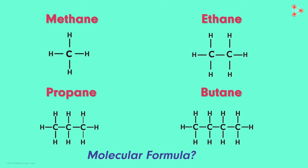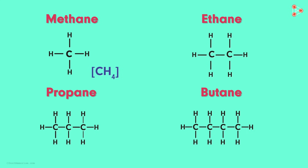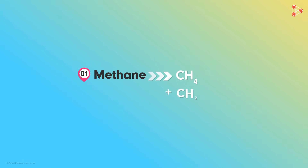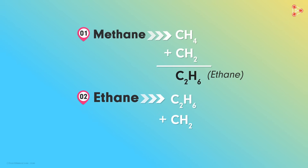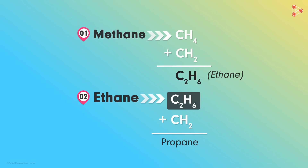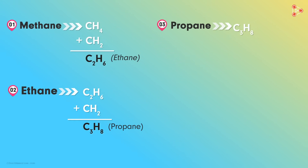First, let's look at the molecular formula for each. The molecular formula of methane is CH₄, ethane is C₂H₆, and propane is C₃H₈. Butane's molecular formula is C₄H₁₀. Now, if we add CH₂ to the molecular formula of methane, it gives C₂H₆ — that is ethane. Adding CH₂ to ethane gives C₃H₈, which is propane. And adding CH₂ to propane gives C₄H₁₀ — that is butane.